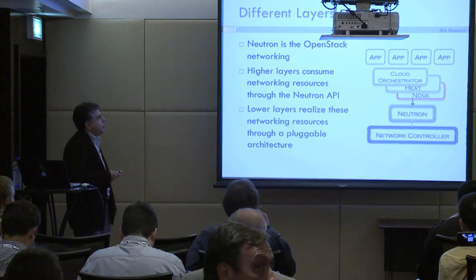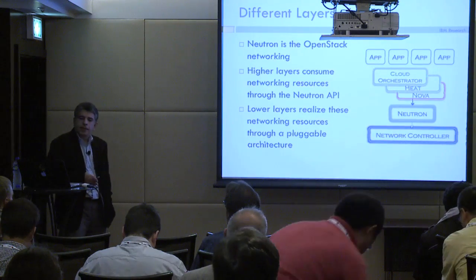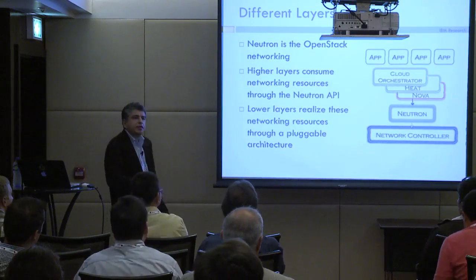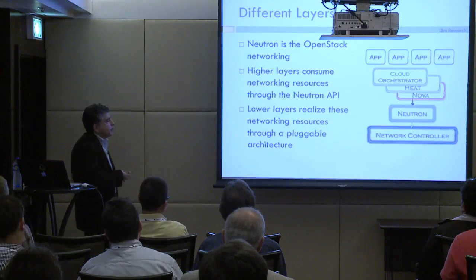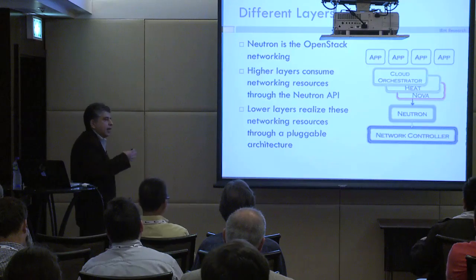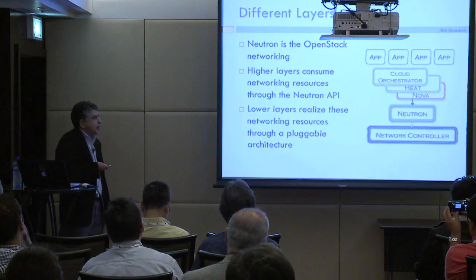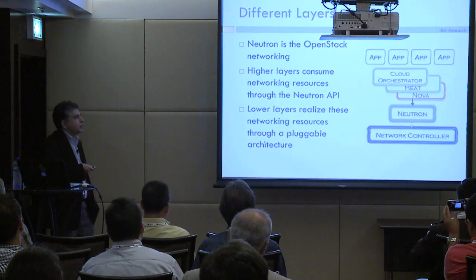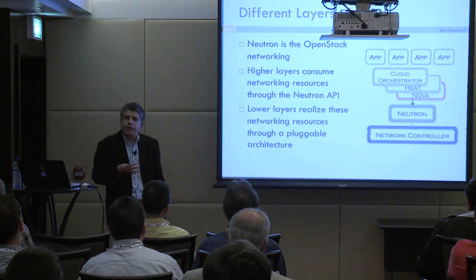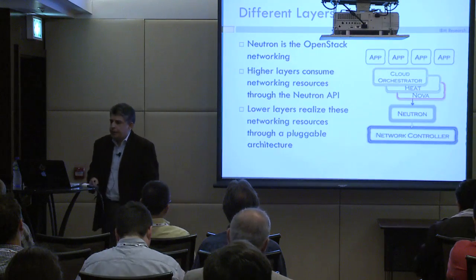Neutron is the OpenStack networking project. Higher layers consume networking resources through the API that Neutron provides, and lower layers of the stack realize these network abstractions. Before I talk about Neutron and the abstractions it provides, let's have a quick look at the abstractions at higher and lower layers and see how they relate to what Neutron does.